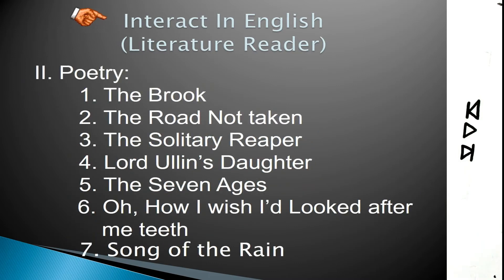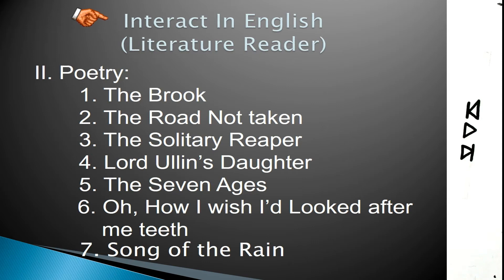The second section is the poetry section, which comprises the following poems: The Brook, The Road Not Taken, The Solitary Weeper, Lord Ullin's Daughter, The Seven Ages, Oh How I Wished I Had Looked After Me Teeth, and The Song of the Rain.